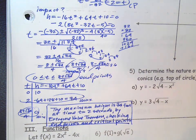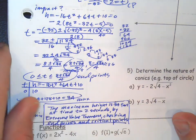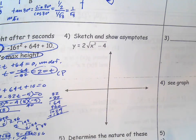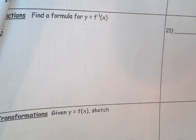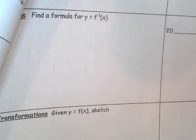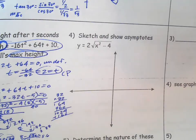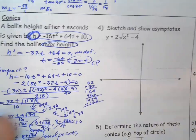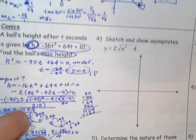You have to do this work even on the non-gravity problems. There isn't an optimization problem on this corrective, so you'll have to go back and do the other ones on homework or the original test.